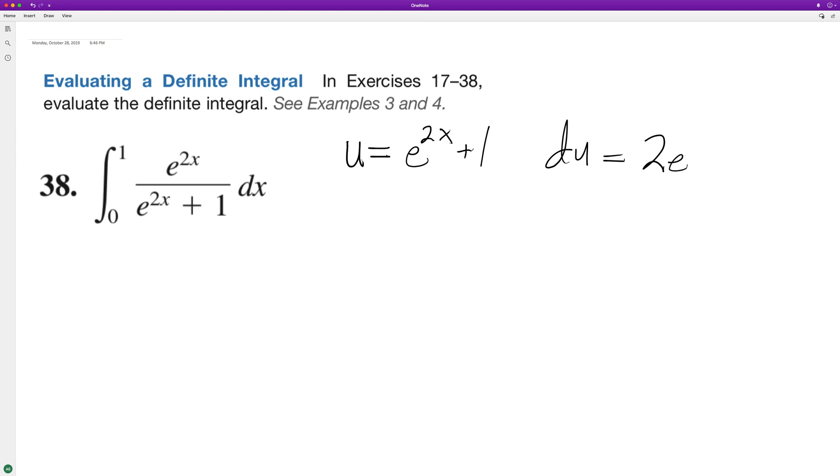So it's going to be 2 e raised to the 2x, and the derivative of 1 is just 0. So to get du equal to dx, we need to divide through by 2, so we take one half of that.